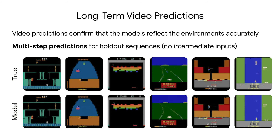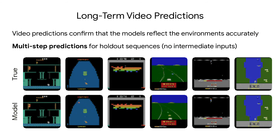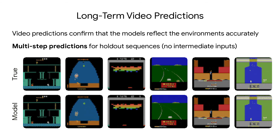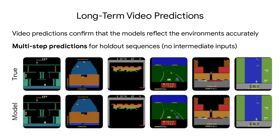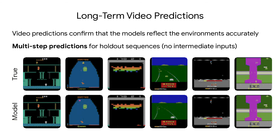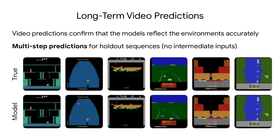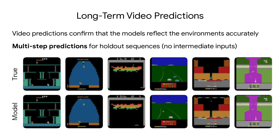Here are some video predictions produced by the world model. These confirm that the world model learns to reflect the environments accurately. The top row shows holdout trajectories, and the bottom row shows multi-step predictions by the model, without receiving intermediate inputs.